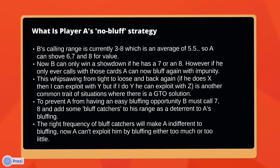So B has to call with seven and eight, but also, to deter A from bluffing, he'll have to have some bluff-catches in his range. Because it's a zero-sum game, any time A has a profitable bluff opportunity, that costs B. So even though theoretically the six could never be good in some strategies, B needs to call sometimes with a six just to hold off the threat of bluffing. There is a correct frequency — the right frequency of bluff catches will make A indifferent to bluffing, so that when A gets a one, it doesn't matter if he bluffs or folds. He will break even in the long run either way. So what frequency would that be?